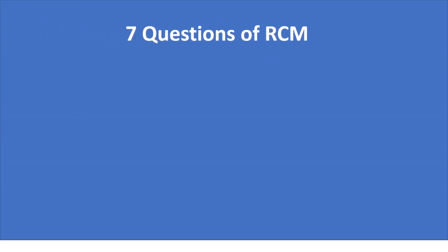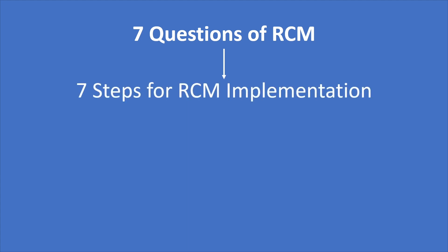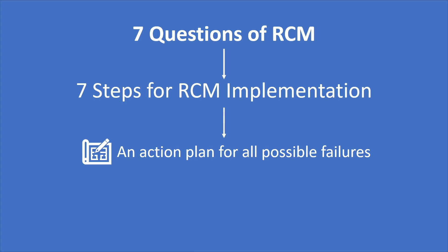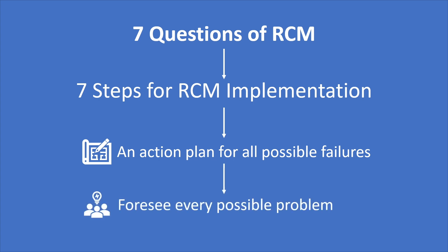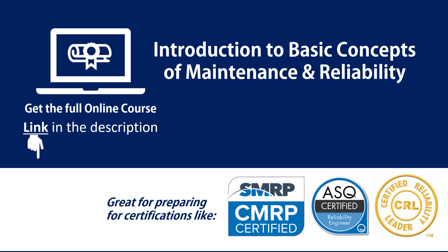So in this way, the seven questions of reliability-centered maintenance constitute the seven steps of RCM implementation. By the end of these seven steps, what you ultimately get is an action plan for dealing with every failure possibility in the plant. This is what makes RCM unique — it provides a tremendous framework to foresee every possible problem and develop a plan to deal with it. With this, we conclude our discussion. See you in the next lecture.